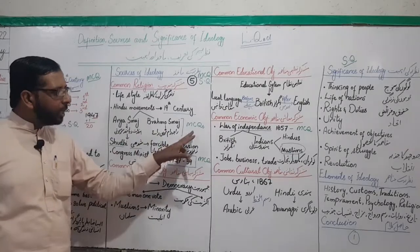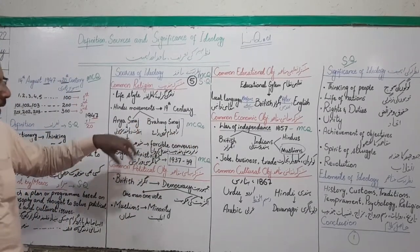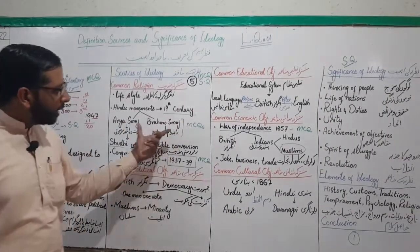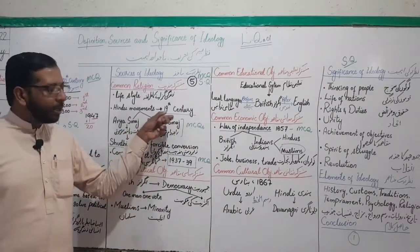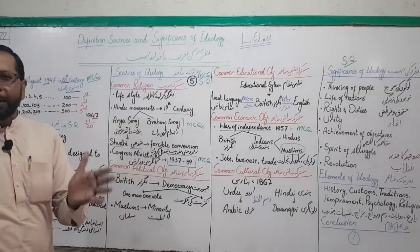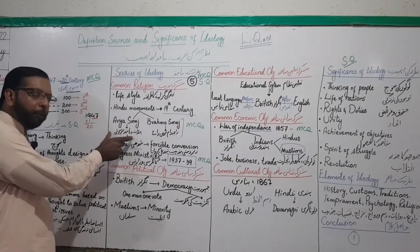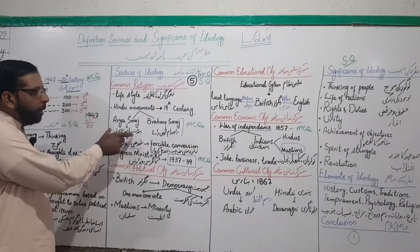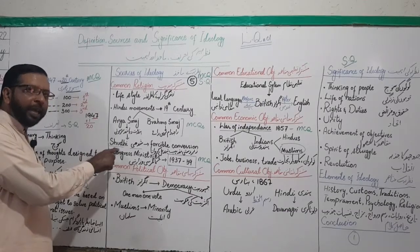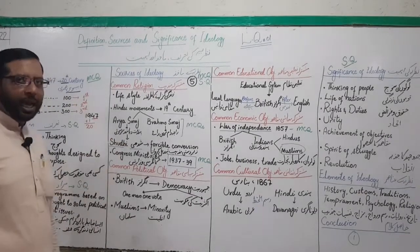As an MCQ you may be asked: who was the founder of Brahmo Samaj, or which movement was started by Pandit Dayanand Saraswati. Similarly, it may be asked in which century Arya Samaj and Brahmo Samaj were started — important point, mentioned in the book, mark it. The founder of Arya Samaj, Pandit Dayanand Saraswati, started a program named Shudhi — ek program shuru kiya tha jise Shudhi kaha jata tha.